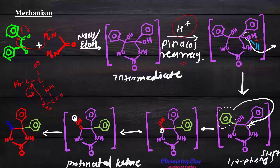After attack of H⁺, the OH becomes H₂O and leaves, creating a positive charge on that carbon. Due to this positive charge, the electron-rich group — the benzene ring — attacks via a 1,2-diphenyl shift, migrating to the adjacent position. The positive charge then shifts, and the OH lone pair removes the positive charge, creating a protonated ketone. This protonated ketone undergoes ketone formation, and at the end we get our phenytoin compound. That is the mechanism — the reaction proceeds through pinacol rearrangement.